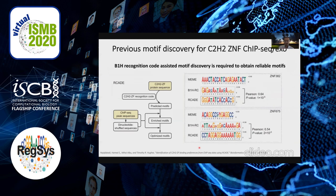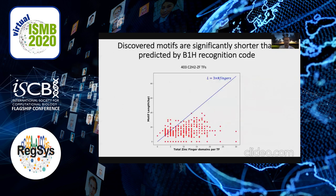Once you have ChIP-seq and ChIP-exo data, you want to do motif discovery. Some previous motif discovery for C2H2 zinc finger transcription factors focused on using the recognition code to guide motif discovery, and this works pretty well in practice. But there's an issue with all the motifs that are out there for zinc finger transcription factors: the motifs are much shorter than what you would expect — about three times the number of zinc finger domains long, since each zinc finger binds three nucleotides of DNA.